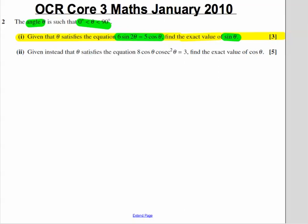Hi there. The following video will show us how to do Question 2 Part I of the OCR Core 3 Maths January 2010 past paper. Let's have a go at doing this question. The angle theta is between 0 and 90, that's what we're told at the start.